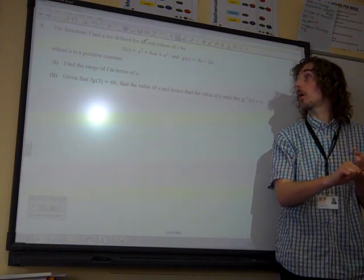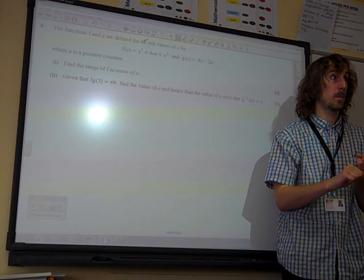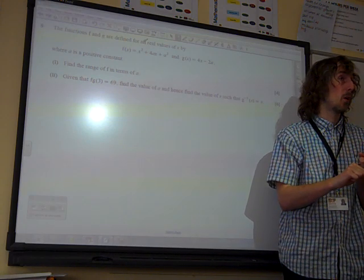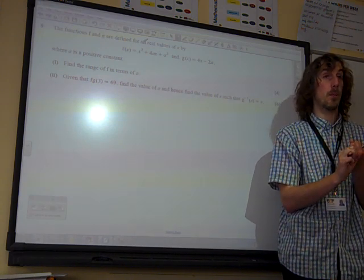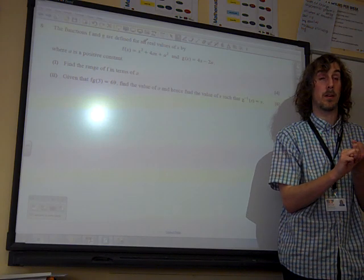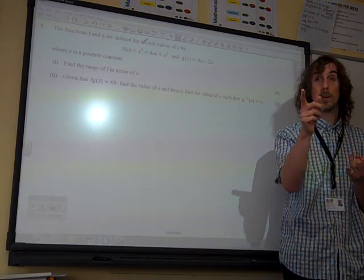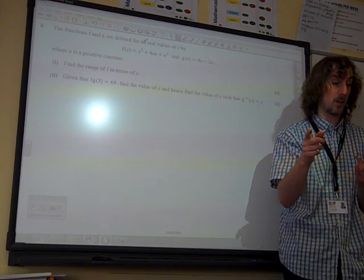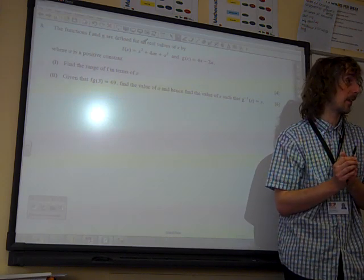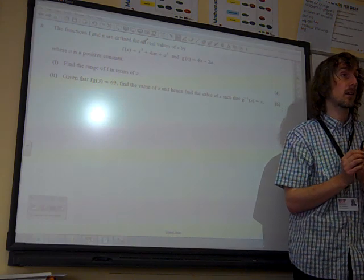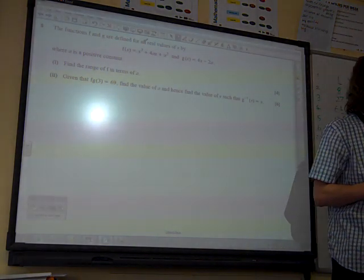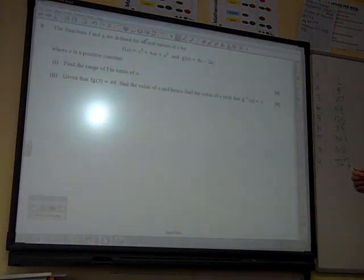We have two ways that we can go about doing this. What's the two main ways we can find the turning point of the quadratic? Differentiation or completing the square. Either one we can do. Which one do you fancy? Complete the square. OK, let's do complete the square.